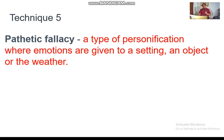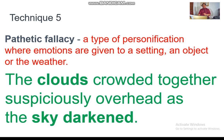Technique number five is called pathetic fallacy. It is also a type of personification where emotions are given to the setting, an object, or the weather. Look at the example: 'The clouds crowded together suspiciously overhead as the sky darkened.' Only a person can actually crowd together.